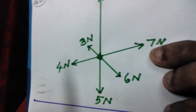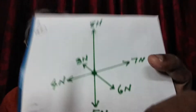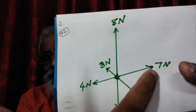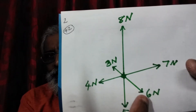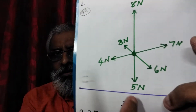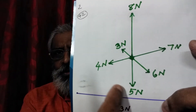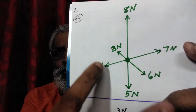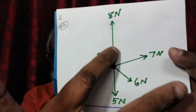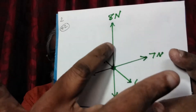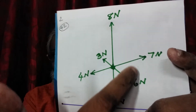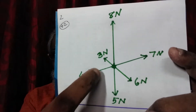Looking at the figure: 8 Newton, 7 Newton, 6 Newton, 5 Newton, 4 Newton, and 3 Newton forces are arranged with 60 degrees between each adjacent force.